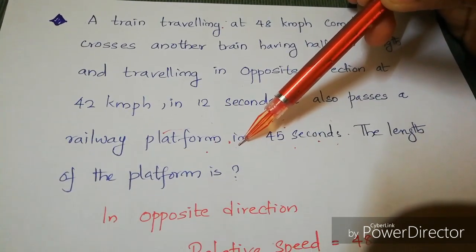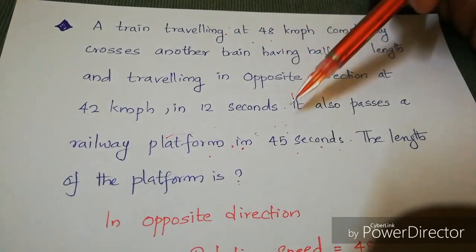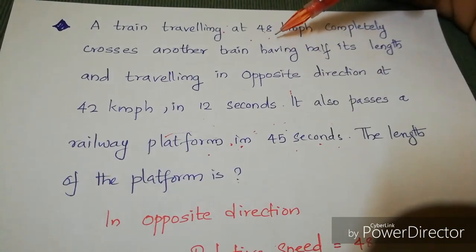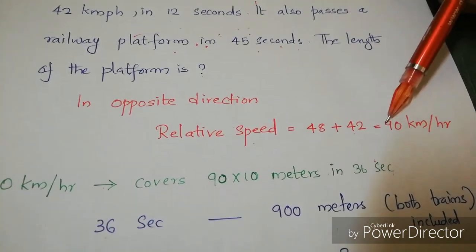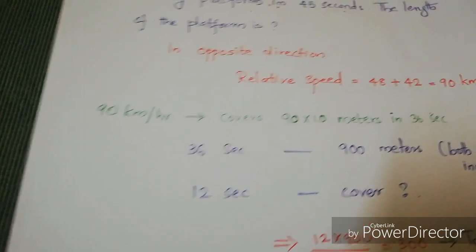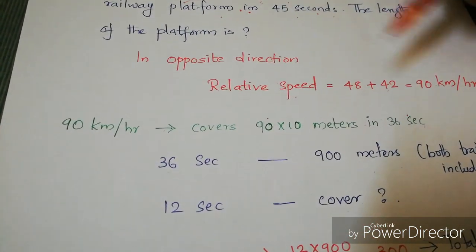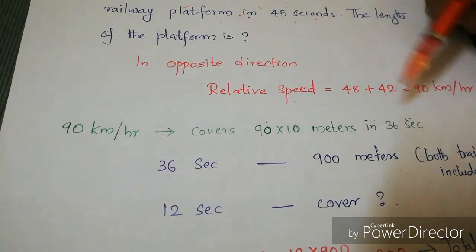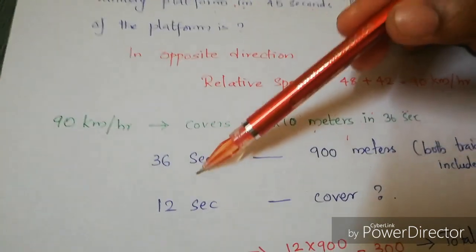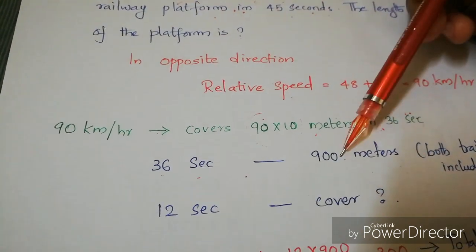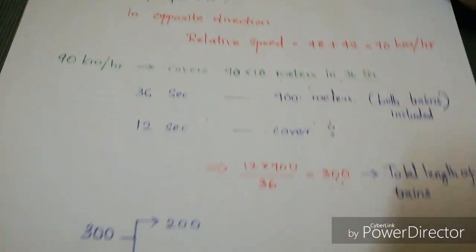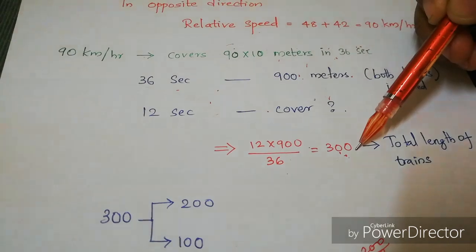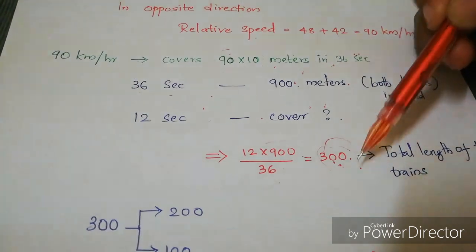The two trains are in opposite directions, so relative speed = 48 + 42 = 90 km/h. Using our trick: in 36 seconds it covers 90 × 10 = 900 meters. In 12 seconds: 12 × 900 ÷ 36 = 300 meters. This 300 meters is the combined length of both trains.